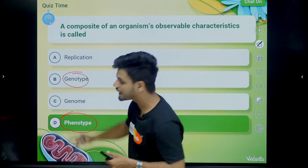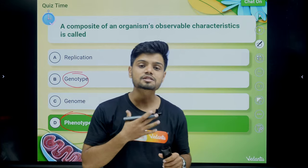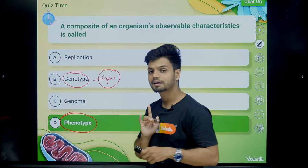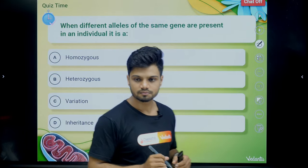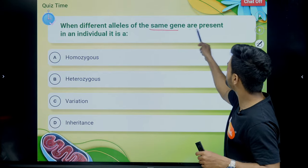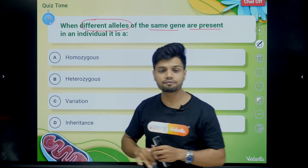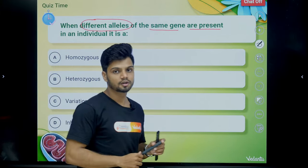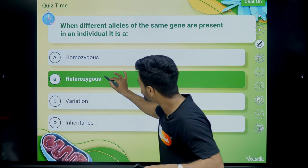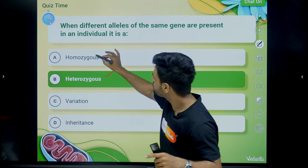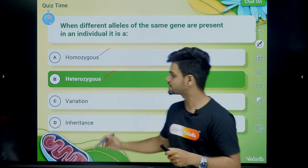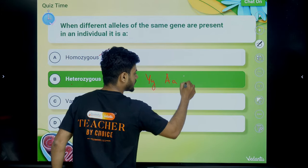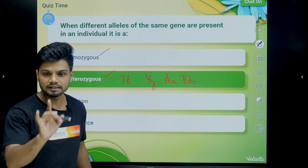What is genotype? Genotype is the genetic property. For example, we have 46 chromosomes — that is our genotype. Genotype is related to the genes. When two different alleles are present together in the same gene, it is called the heterozygous condition. When the two alleles are the same, it is called homozygous. When the two alleles are completely different — for example, capital T small t, capital Y small y — that is heterozygous.